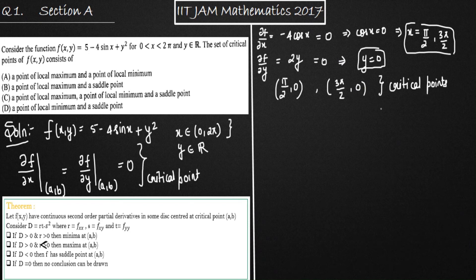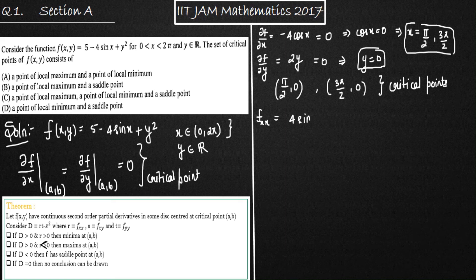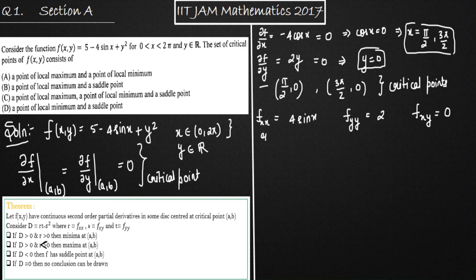To check whether these critical points are points of minima, maxima, or saddle points, we use the theorem. We need to calculate fxx, fyy, and fxy. So fxx = 4sin(x), fyy = 2, and fxy = 0. Here fxx is r, fxy is s, and fyy is t.